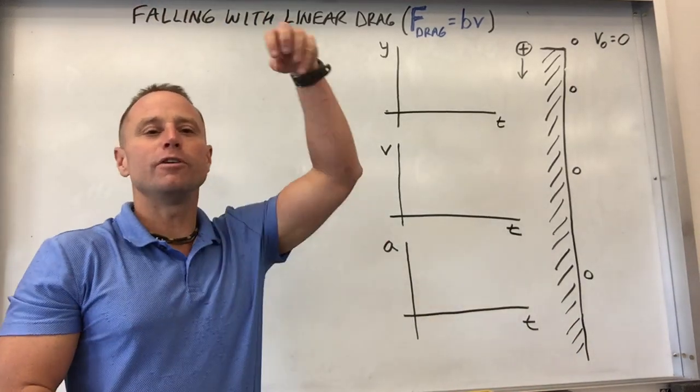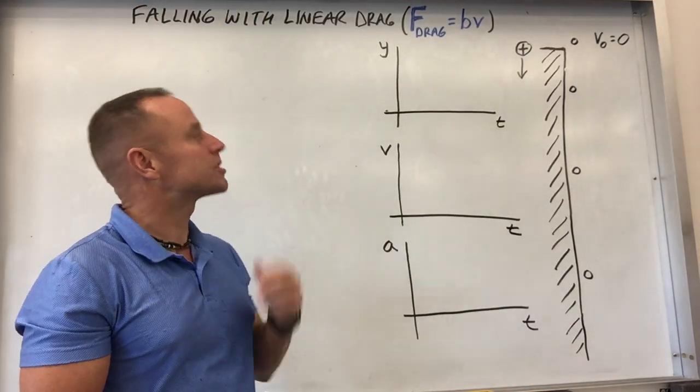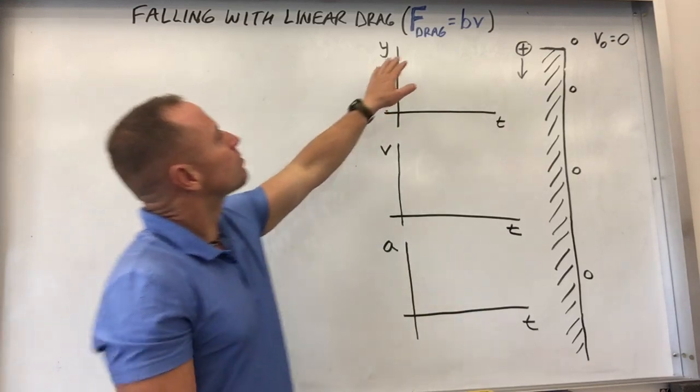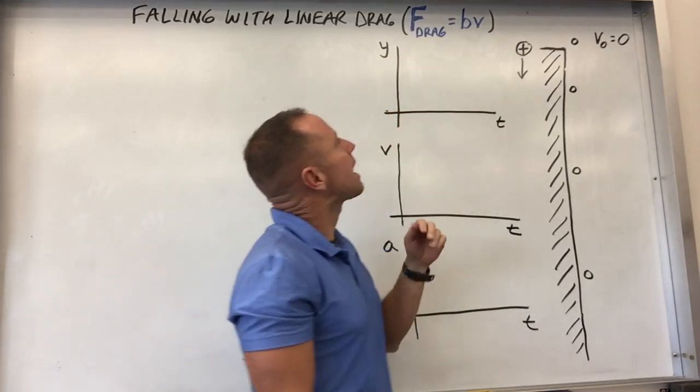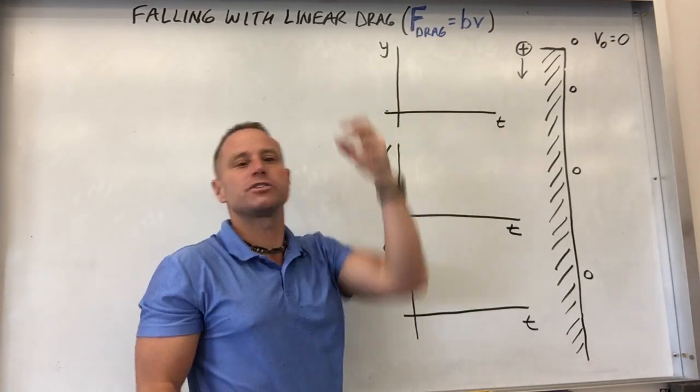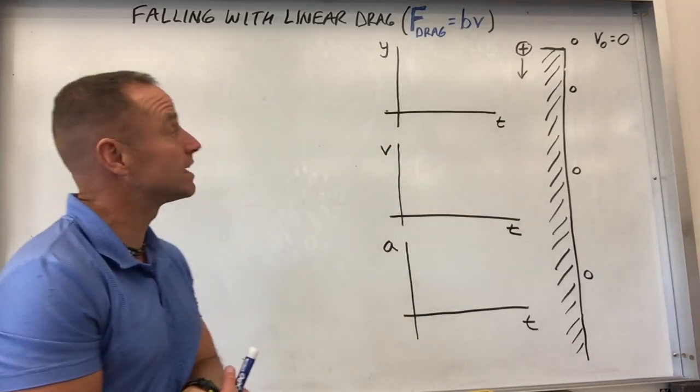Alright, we're going to take a look at how things move when you drop them when there's air friction or drag on them. We'll use a real simple model for drag force that's proportional to the velocity. It's what's called linear drag.